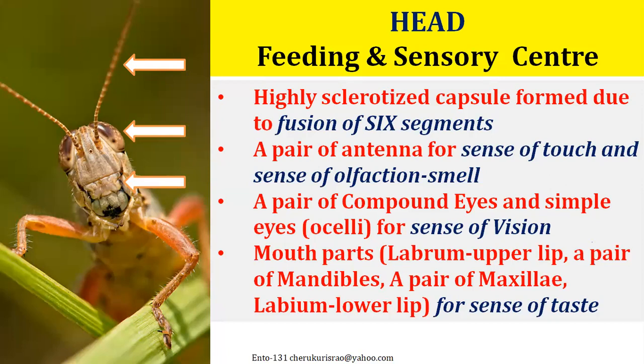Another important part of the head is the mouth parts — the upper lip (labrum), the lower lip (labium), and two pairs of jaws: one pair called maxilla and another pair called mandibles. These are typical chewing and biting types, though there are many modifications. The maxilla or lower lip also has sense cells useful for the sense of taste.